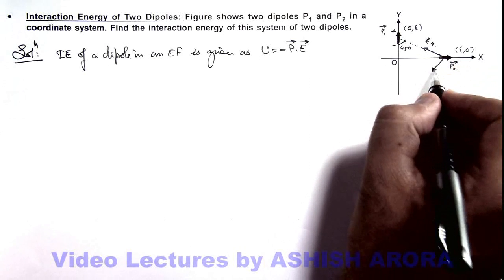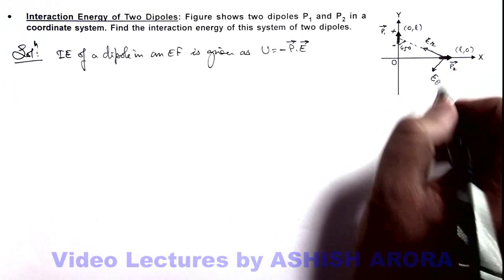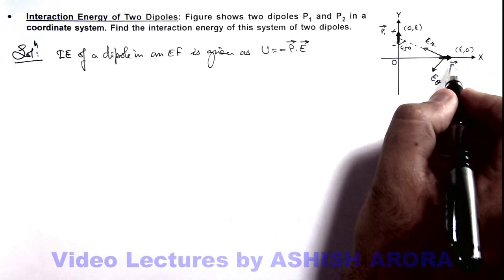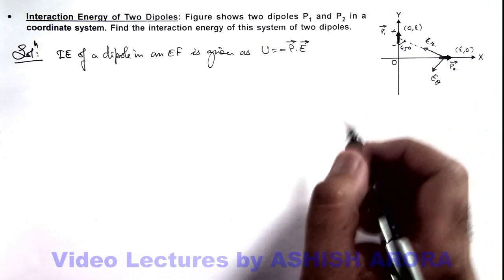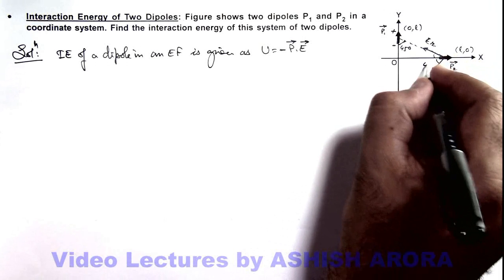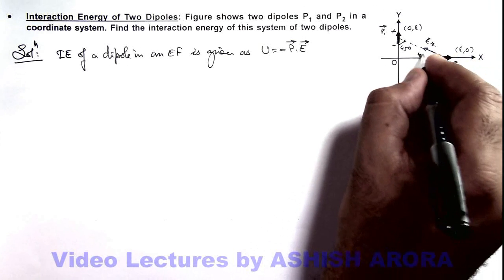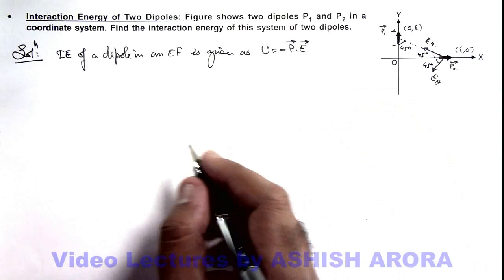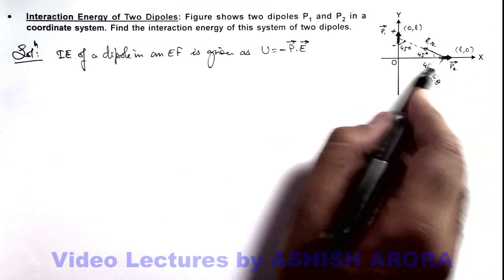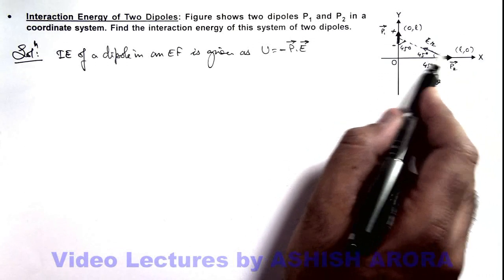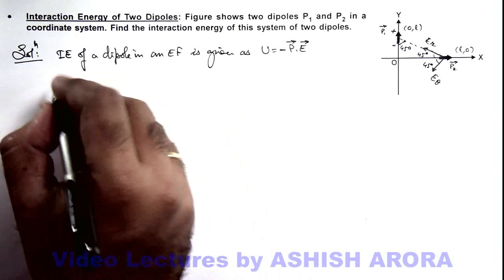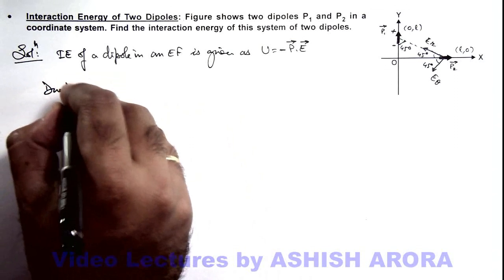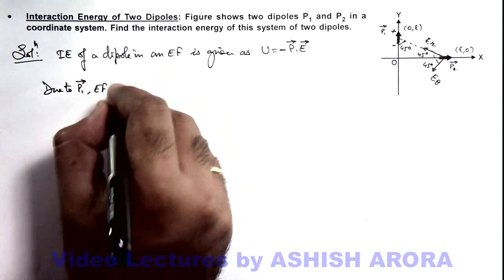The transverse electric field due to this dipole will be in the normal direction, which is Eθ. Due to these 2 electric fields which exist at the location of p2, we can find out the interaction energy of p2 in these 2 dipoles, which are also at 45 degrees with dipole p2. Or if we calculate the direction of Er and Eθ from p2, the direction between vectors will be 135 degrees.